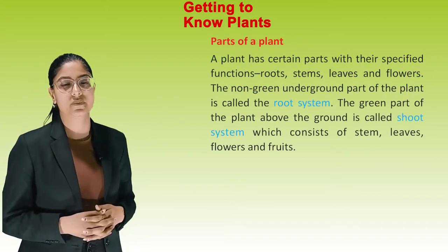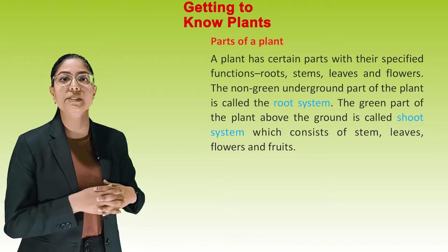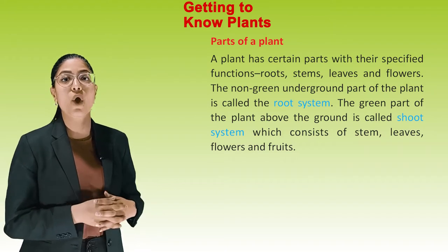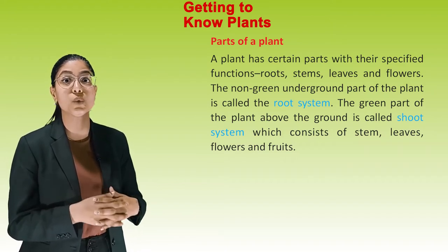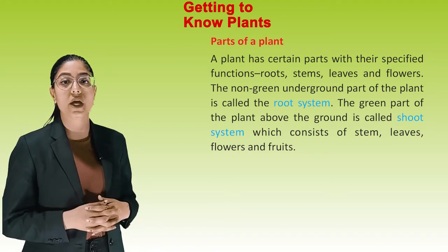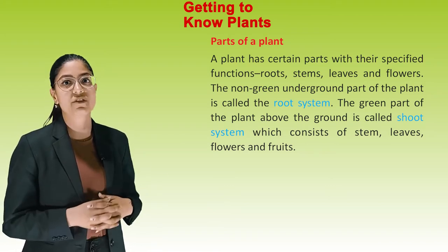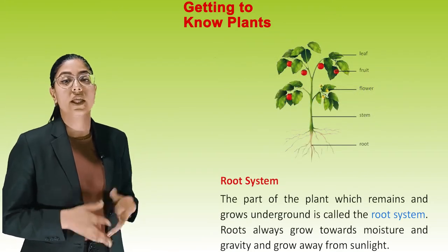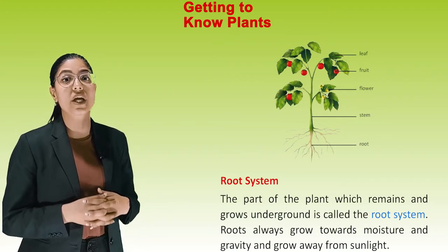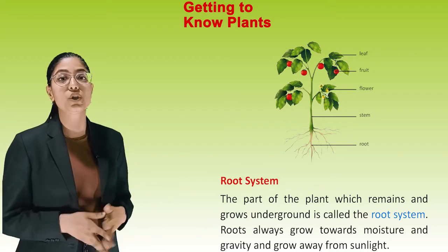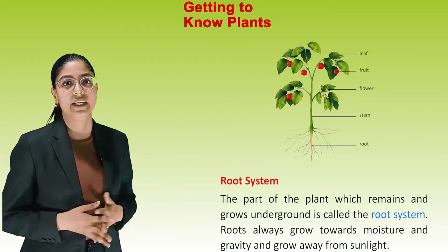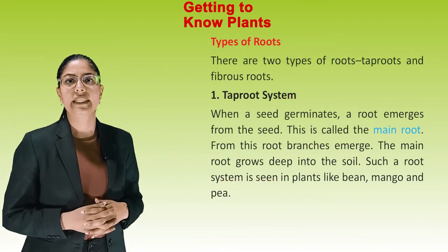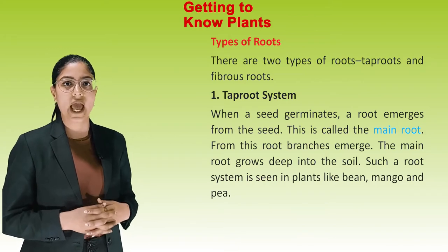Parts of a Plant: A plant has certain parts with their specified functions — Roots, Stems, Leaves and Flowers. The non-green underground part of the plant is called the Root System. The green part of the plant above the ground is called the Shoot System, which consists of stem, leaves, flowers and fruits. There are two types of roots: Taproot and Fibrous Root.